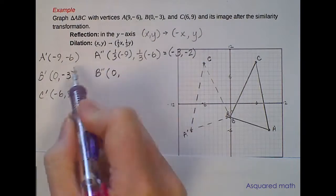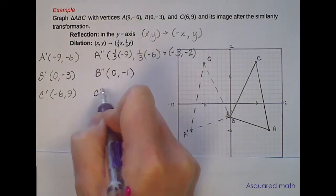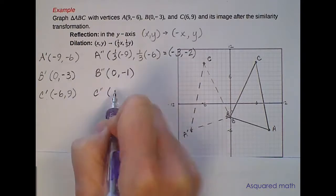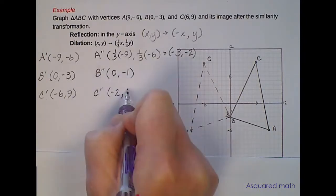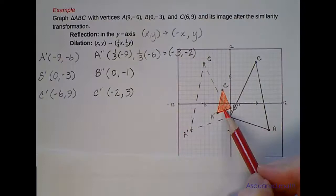And then for C, one-third of -6 is -2, one-third of 9 is 3. So let's plot A'', B'', and C''. So the red figure here is our final image.